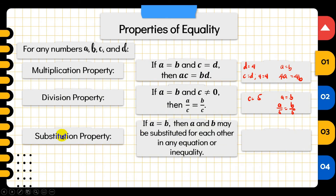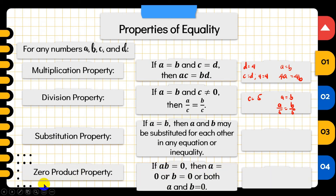For example, if C equals 5 and A equals B, then A divided by 5 equals B divided by 5 — that's the division property of equality. The substitution property of equality means replacing a variable with its known value, just like when we gave values to D and C and substituted them in. The last one is the zero product property: if A times B equals zero, then A equals zero or B equals zero, or both are zero.